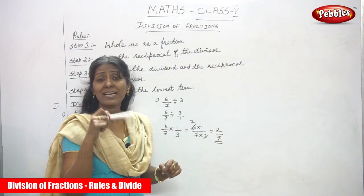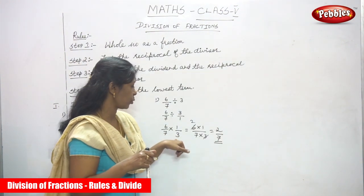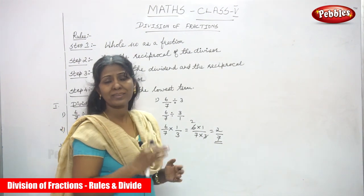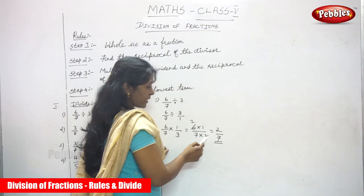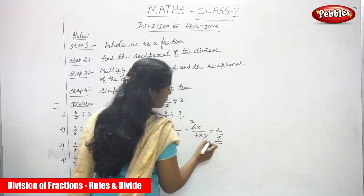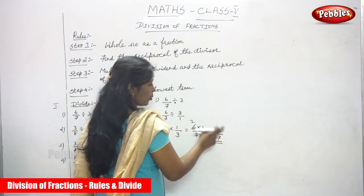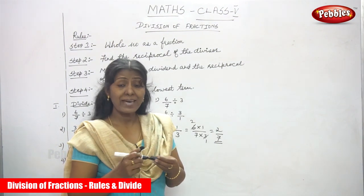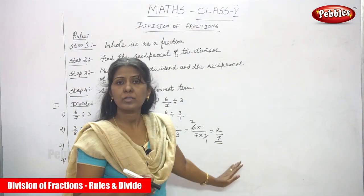Step 2: 6/7 is the dividend and 3/1 is the divisor. Make the divisor reciprocal: 3/1 upside down gives 1/3. Step 3: multiply — 6 × 1 over 7 × 3. Cross-cancel: 3 into 6 gives 2, 3 into 3 gives 1. So 2 × 1 over 7 × 1 = 2/7. This is the lowest term, so 2/7 is the final answer.